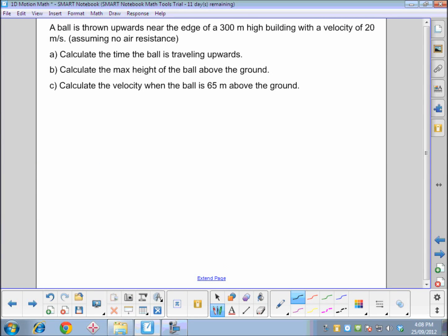Okay, we're going to do this motion problem to help you review with your equations for your quiz and test coming up. A ball is thrown upwards near the edge of a 300-meter-high building with a velocity of 20 meters per second, assuming no air resistance. Calculate the following.